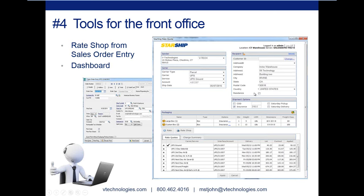The front office can also do address validation ahead of time — Starship normally validates at time of shipment, but you can do it early. Starship validates to plus-four using UPS, USPS, and FedEx web services to make sure the address is valid, and it will automatically correct the residential/commercial flag as well.